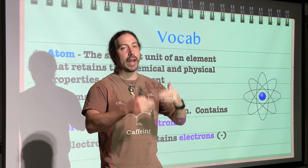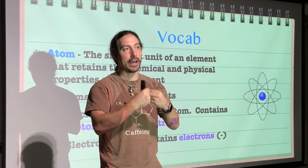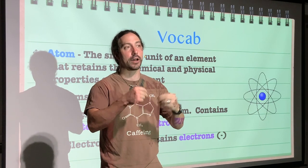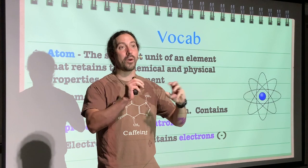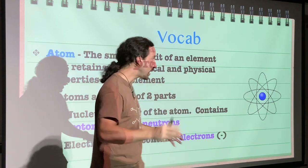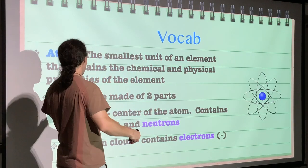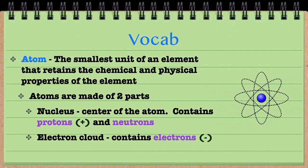And atoms are the smallest particle that you can have different types of them. Once you get smaller than an atom, every particle at that level is exactly like every other particle at that level. So atoms are the smallest particles where there are different types.